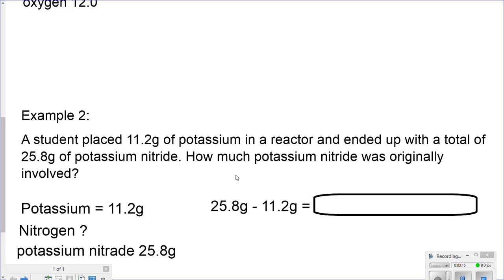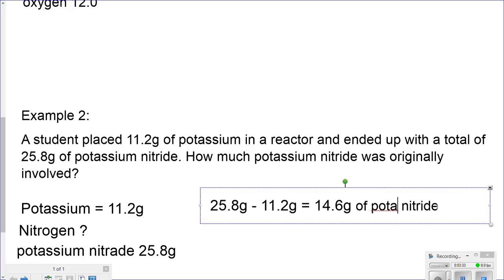Listen to the math. Simple math. 25.8 grams of one substance minus 11.2 grams of the other substance should give me whatever the other substance is. In this case, 14.6 grams. In this case, it's 14.6 grams of nitrogen.